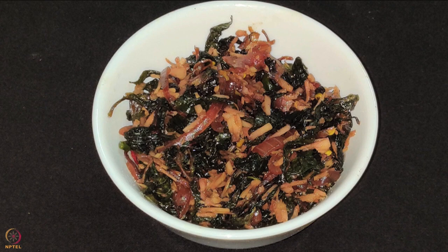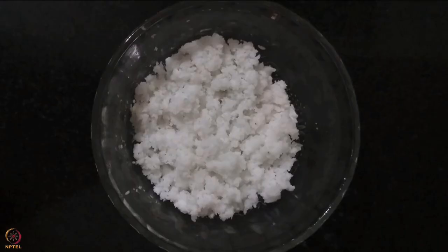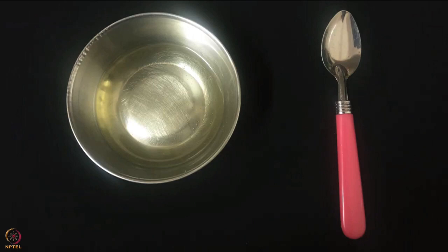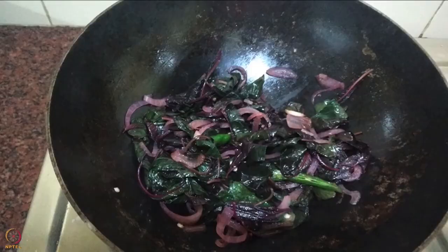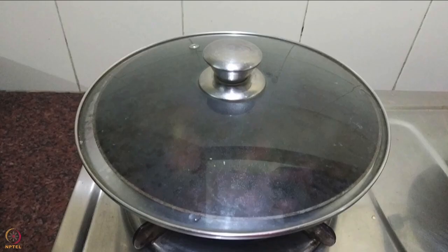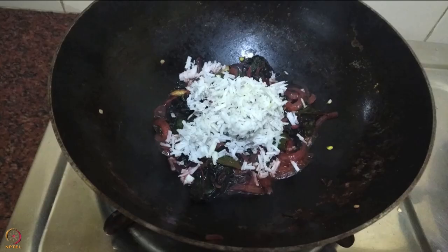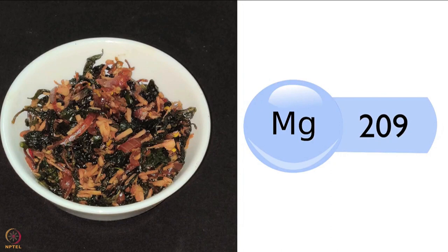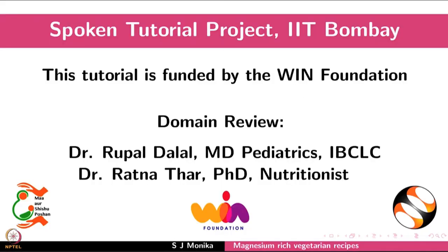The last recipe is amaranth leaves stir fry. For this recipe you need 100 grams of washed amaranth leaves, 4 cloves of garlic, 1 small onion, 2 tablespoons grated coconut, 2 green chilies, a pinch of turmeric, salt to taste, and 1 teaspoon of oil. Heat oil in a pan, add garlic, green chilies, and onion; fry till they change color. Add the amaranth leaves, mix well, close with a lid and cook for 5 to 7 minutes. Add salt and turmeric, cook for 1 minute, then add grated coconut and cook for 5 minutes. Half bowl of this stir fry contains around 209 milligrams of magnesium. Include these magnesium-rich recipes in your daily diet for good health. This brings us to the end of this tutorial.